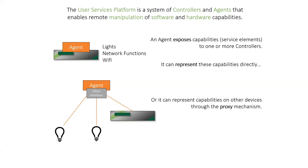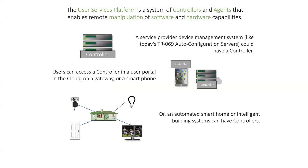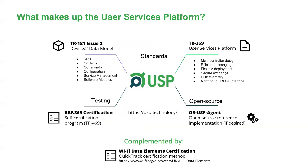So how does it work? A USP agent exposes capabilities, which we call service elements, that are defined in TR181 to one or more controllers. It can represent those capabilities directly, or it can represent capabilities on other devices through the proxy mechanism. There are many different use cases for controllers — one is obviously just like today's TR69 auto-configuration server as part of a device management system. A user can access an agent remotely by having a controller on a smartphone, either in the cloud or through a cloud controller system. It can also be used to build an automated smart home environment.